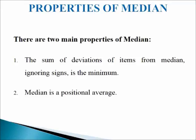The total is smaller than the one obtained if deviations are taken from any other value. If deviations are taken from 7, the deviations ignoring sign would be 3, 1, 1, 3, and 5, and the total is 13. This property implies that median is centrally located.